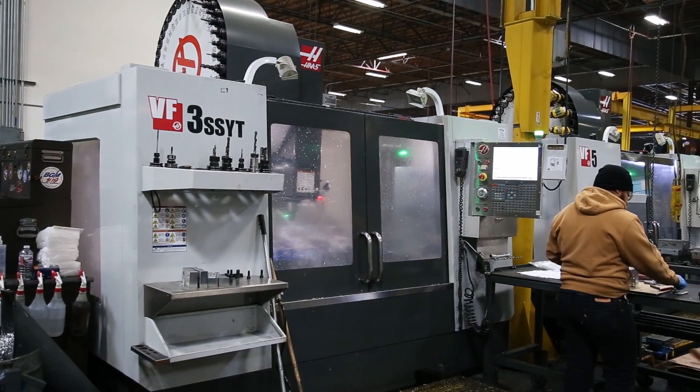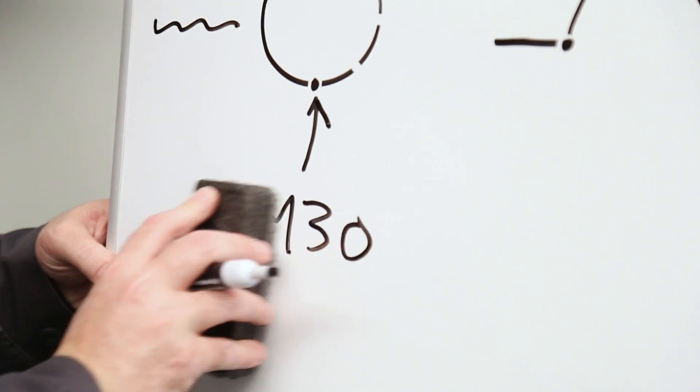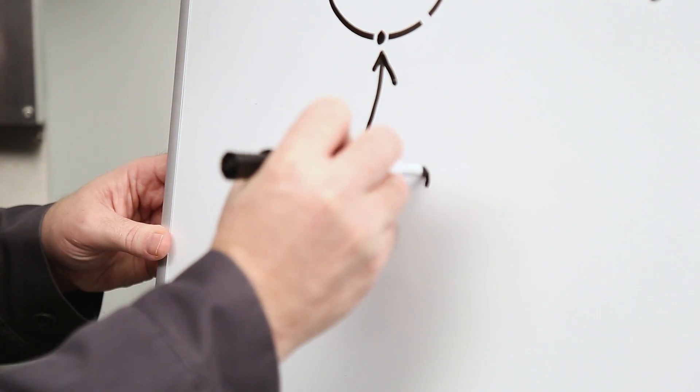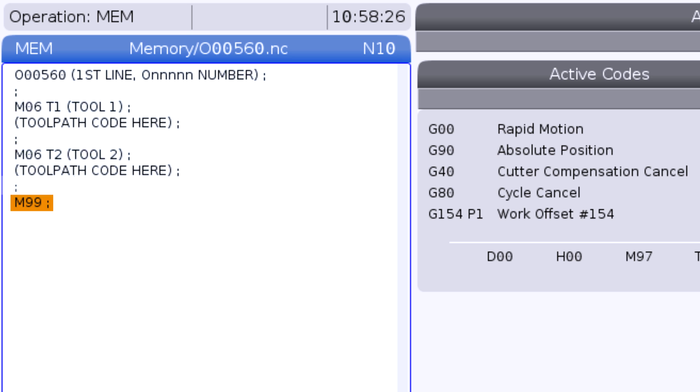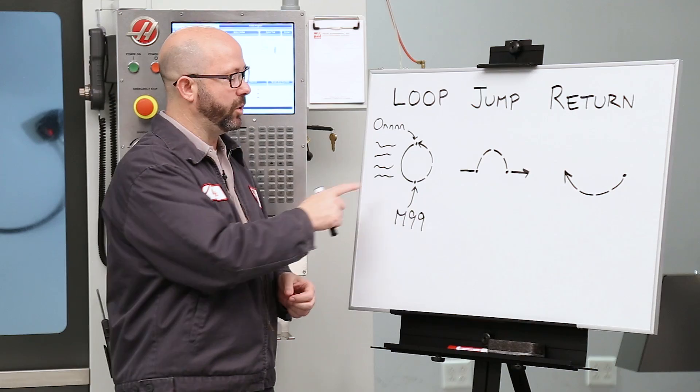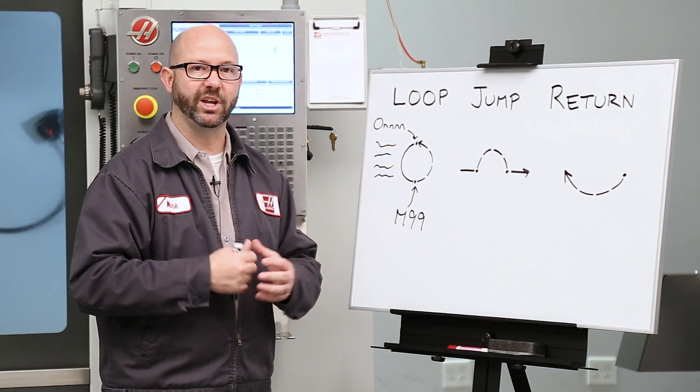Now if we instead reach an M99 in our main program, the machine will not stop running. It's going to loop forever until you press reset or some other bit of code somewhere tells the machine to stop.